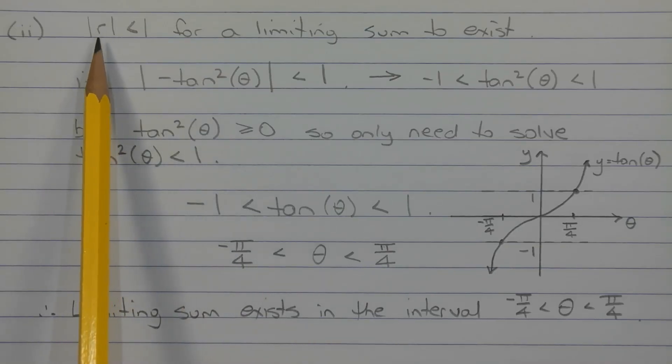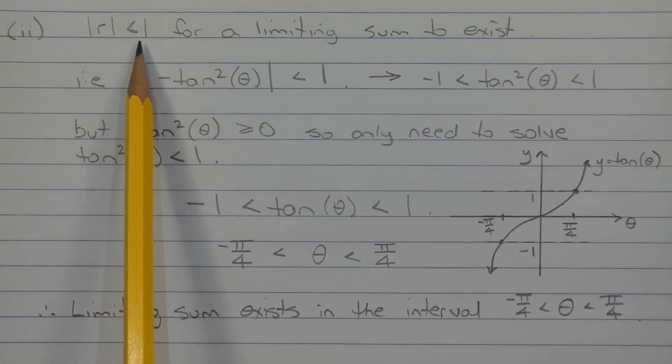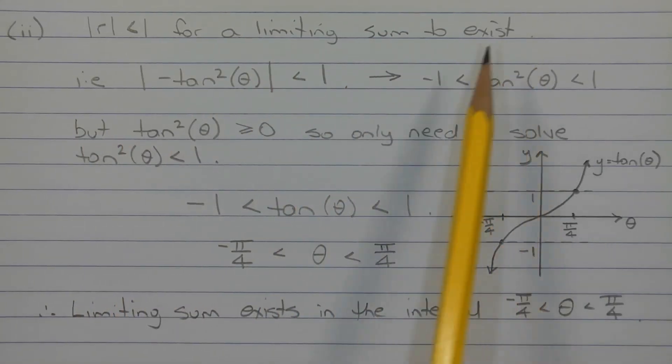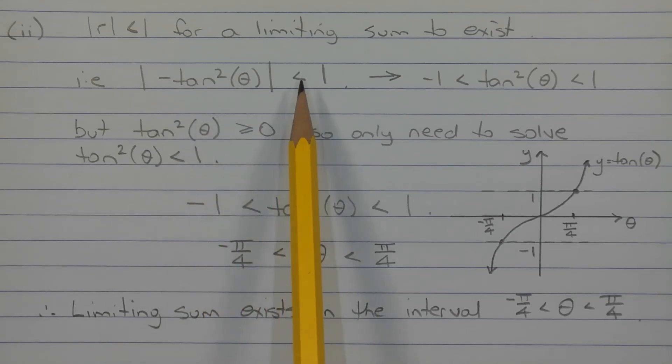The absolute value of the common ratio R must be less than 1 for a limiting sum to exist. In other words, the absolute value of negative tan squared theta must be less than 1.